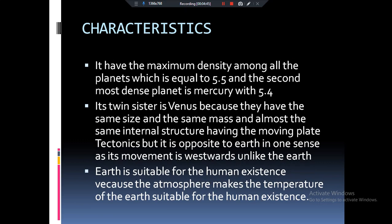Let's come to the another characteristic of the earth. It have the maximum density among all the planets that is equals to 5.5 and we have already talked about the second most dense planet of the solar system that is the mercury.